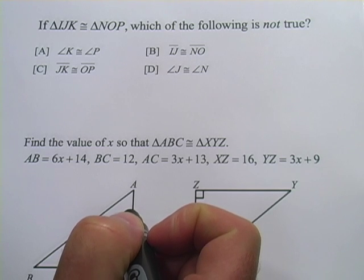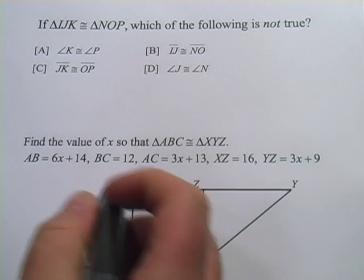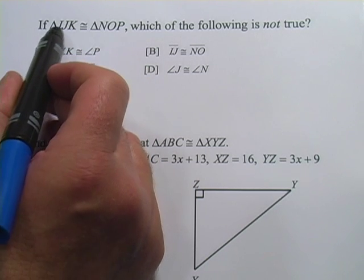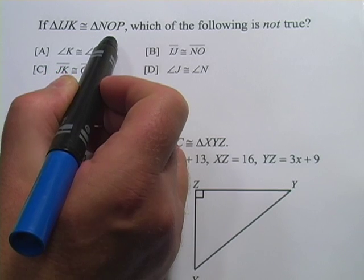In these problems, we're dealing with the idea of congruent triangles, and this notation right here says triangle IJK is congruent with triangle NOP.